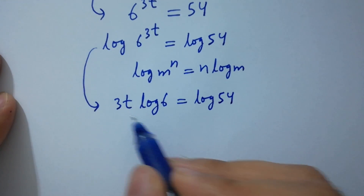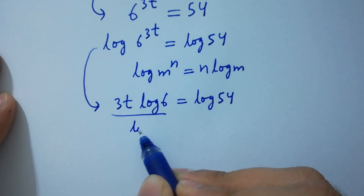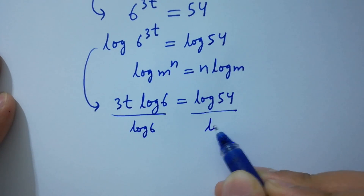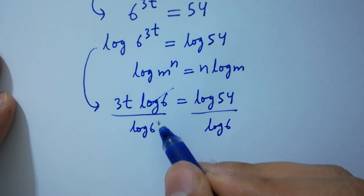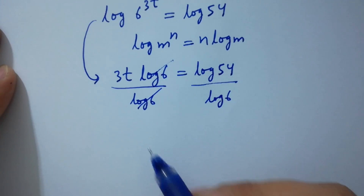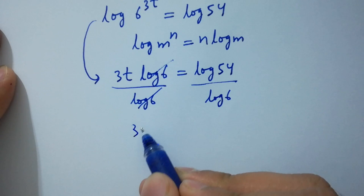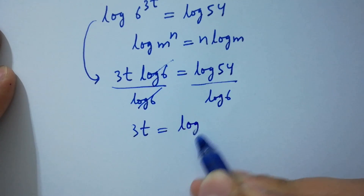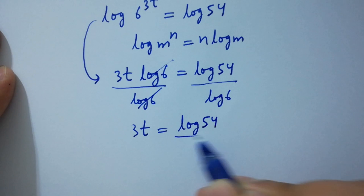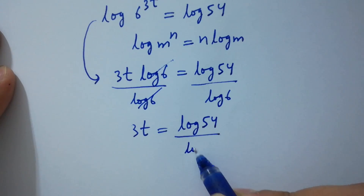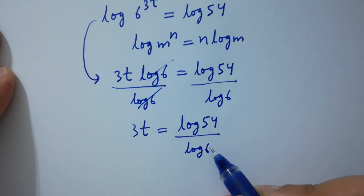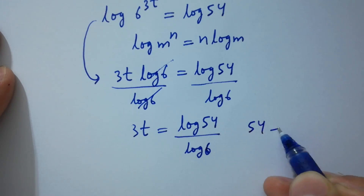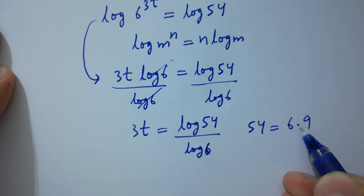Divide by log 6 on both sides. Log 6 and log 6 cancel. So 3t equals log 54 over log 6. As log 54 equals log of 6 times 9.